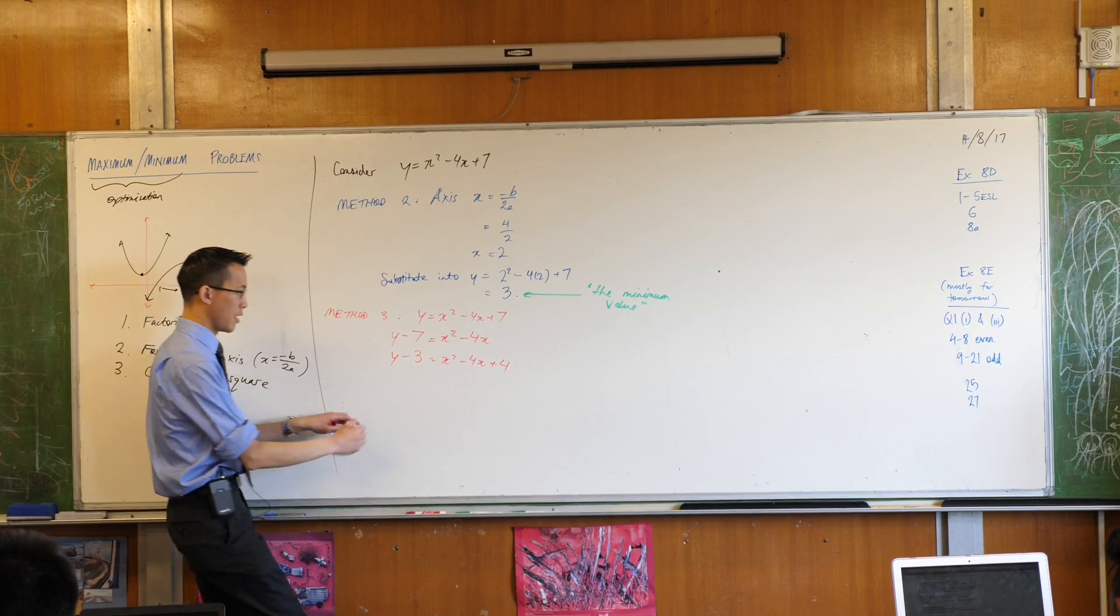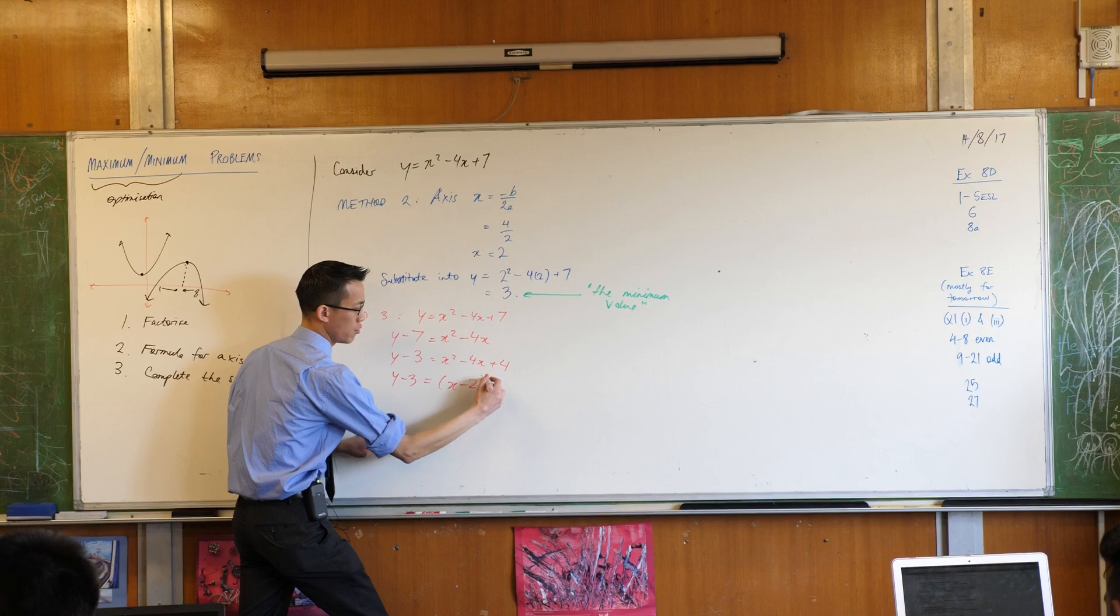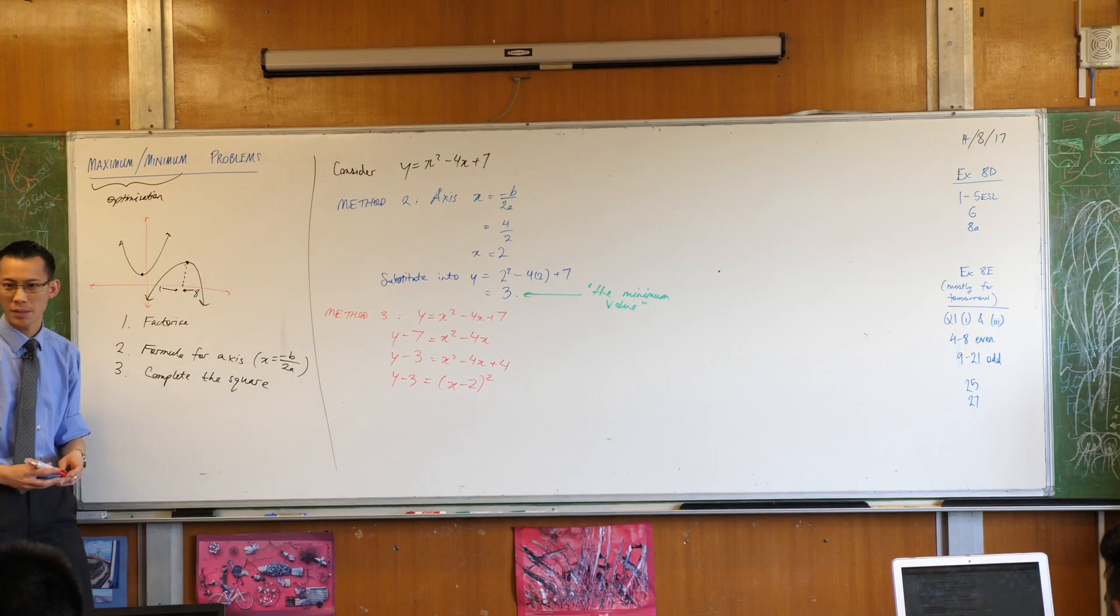You okay with that? Okay, now when you have a look at this, on the right hand side you get x minus 2 all squared. You agree with that?